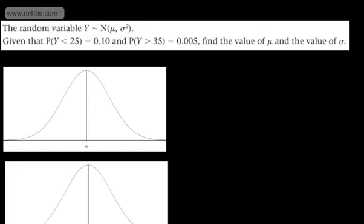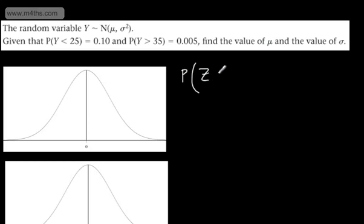Let's have another example. The random variable Y follows a normal distribution with mean mu and variance sigma squared. Given the probability of Y being less than 25 equals 0.1, and the probability of Y being greater than 35 equals 0.005, find the value of mu and find the value of sigma. For equation 1, we have the probability of z being less than 25 minus mu divided by sigma equal to 0.10.